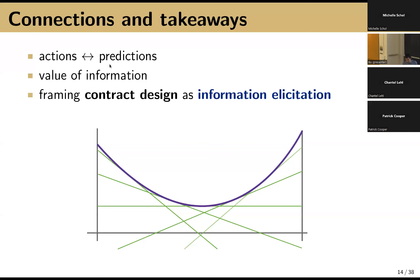The second project is this public projects problem, joint work with Mary Monroe — still in progress. We got a grant from the Ethereum Foundation. The blockchain community is very interested in how groups of people organize — how do you organize people to make good decisions for the group when everyone has possibly conflicting interests? The public projects problem is one of those foundational problems people have studied for many decades.